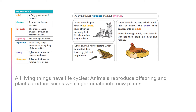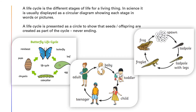All living things have life cycles. Animals reproduce offspring, and plants reproduce seeds which germinate into new plants. A life cycle is the different stages of life for a living thing. In science, it is usually displayed as a circular diagram showing each stage in words or pictures. A life cycle is presented as a circle to show that seeds or offspring are created as part of a cycle — never ending.